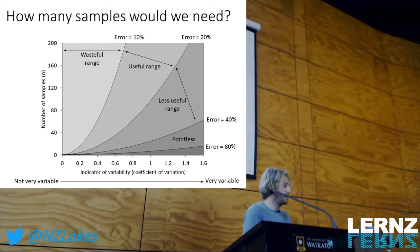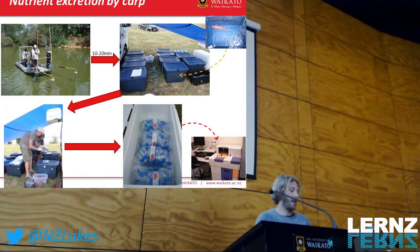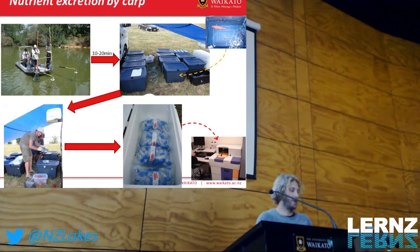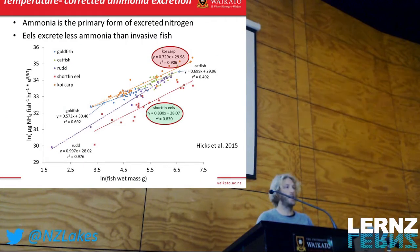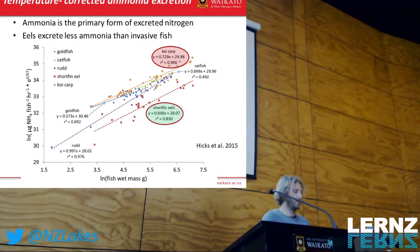Brendan Hicks did a lot of nutrient excretion work with carp and a lot of other fish species. He captured carp in situ and did tank experiments to measure excretion in the lab, and came up with a lot of rates that we can use to estimate population excretion rates and contributions to nutrient budgets. In particular for this study, I'll talk about koi carp excretion rates and short-finned eels, or tuna.